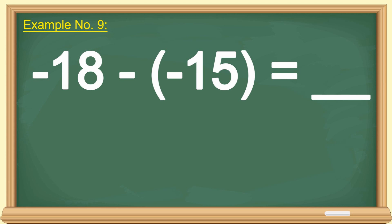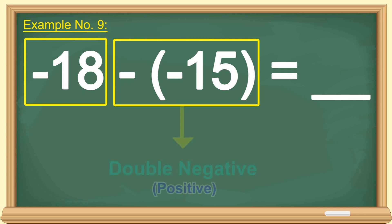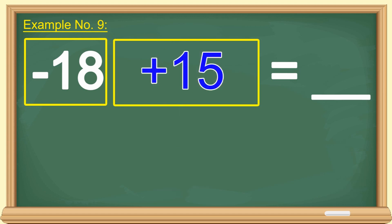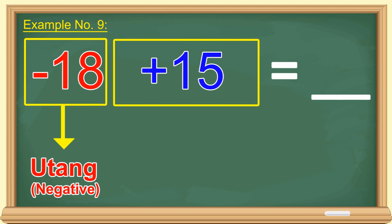Negative 18 minus negative 15 is equal to blank. Paulit-ulit lang. Paghiwalayin. Negative 18 at minus negative 15. Heto ulit. Double negative ang minus negative 15. So, magiging siyang positive 15 na. Negative 18, utang o pera? Utang. E ang positive 15, utang o pera?